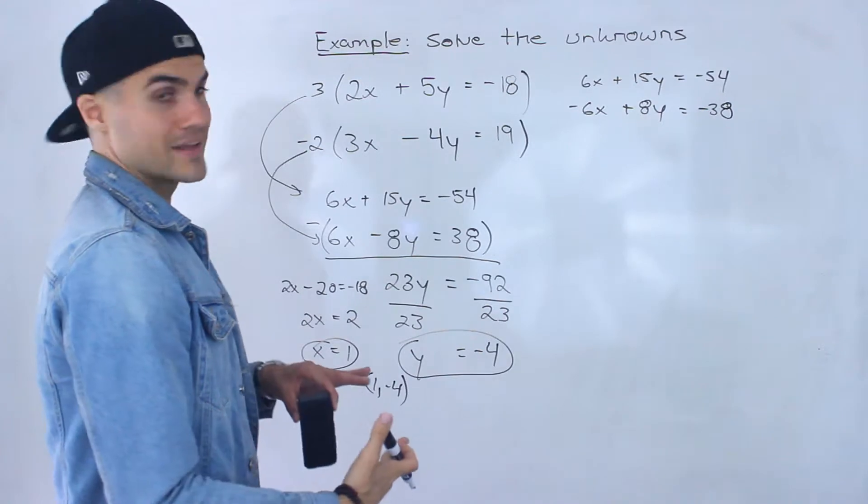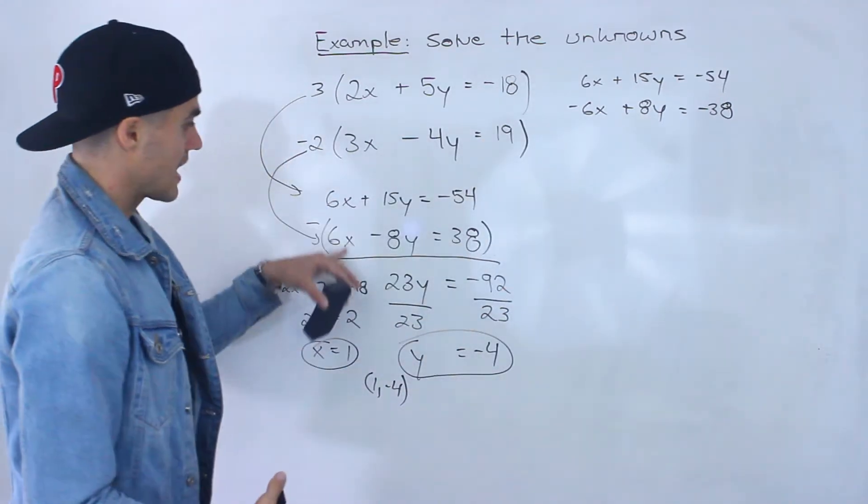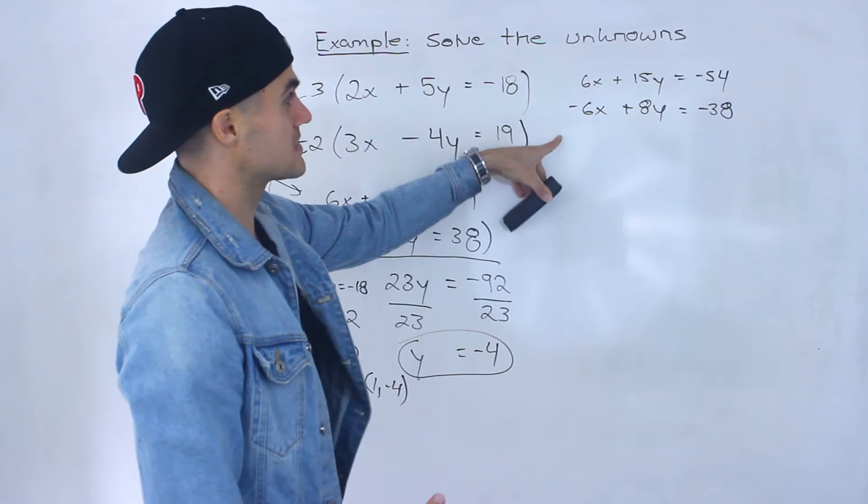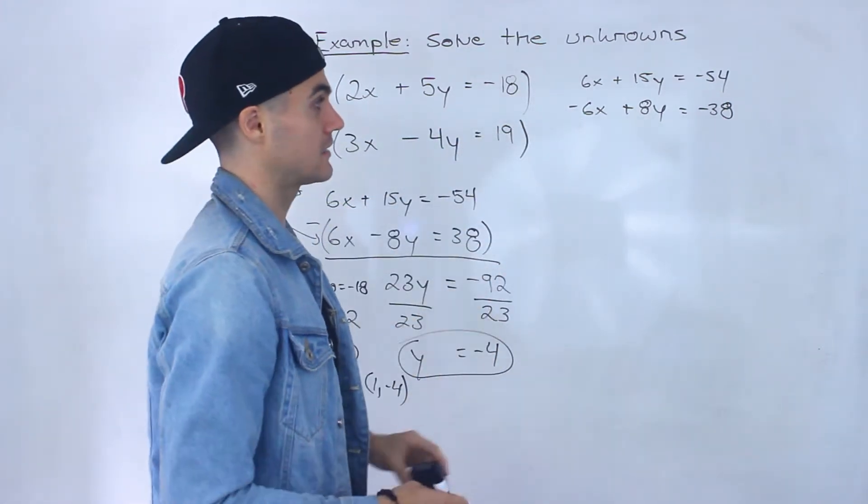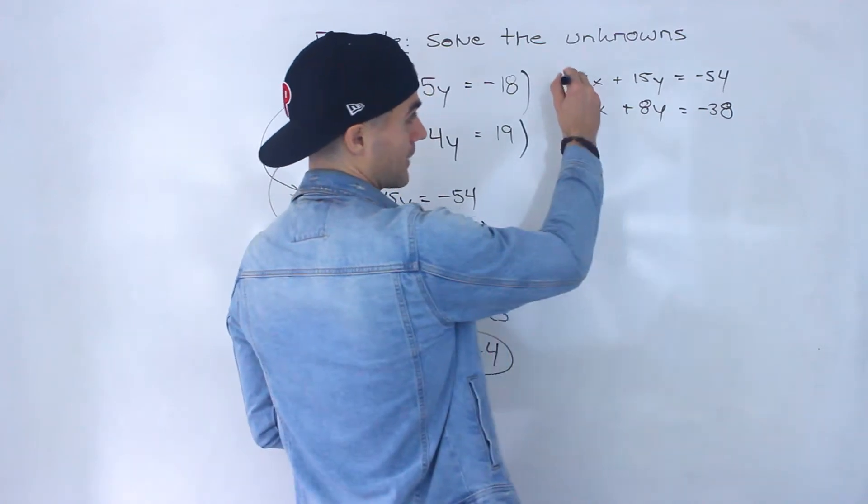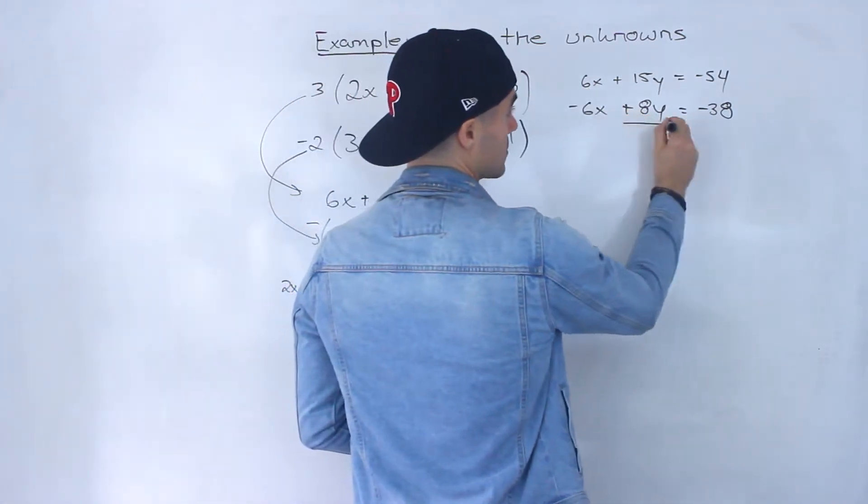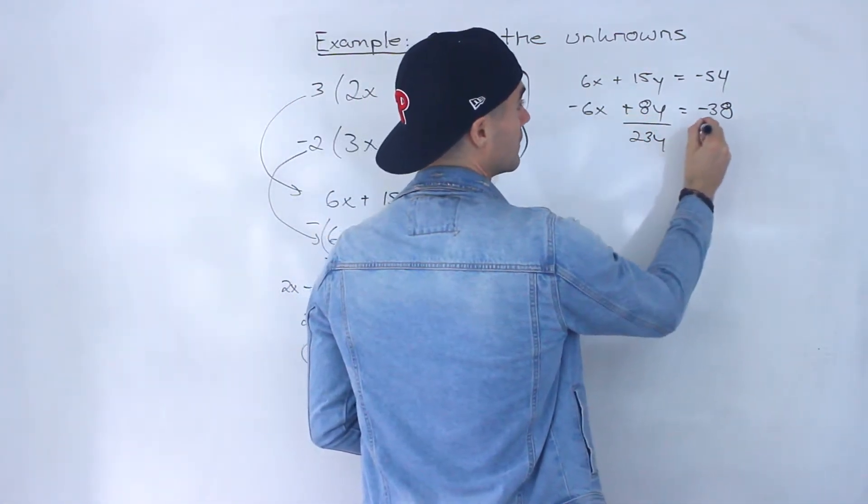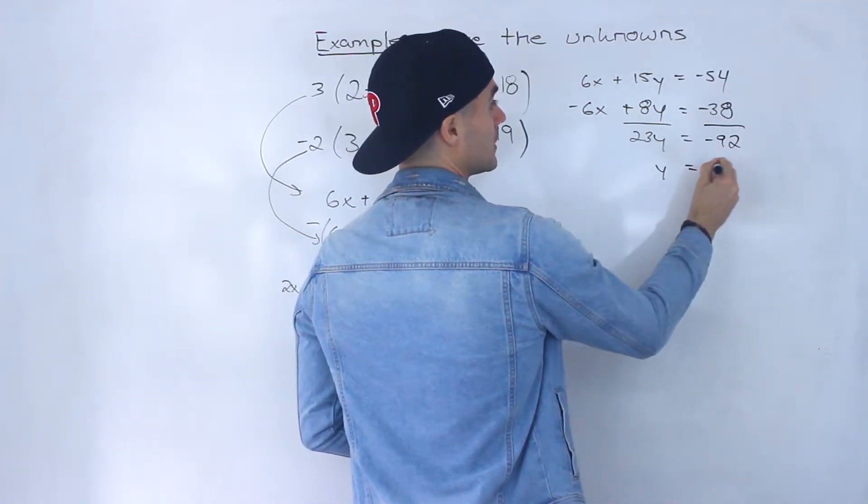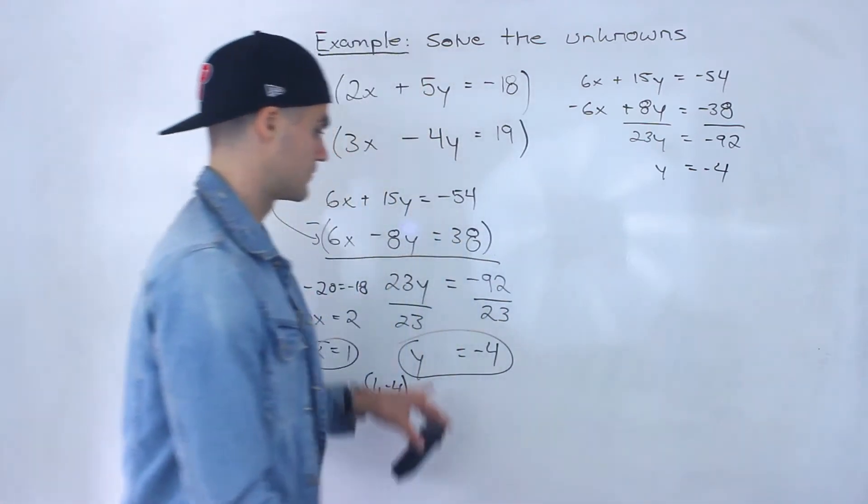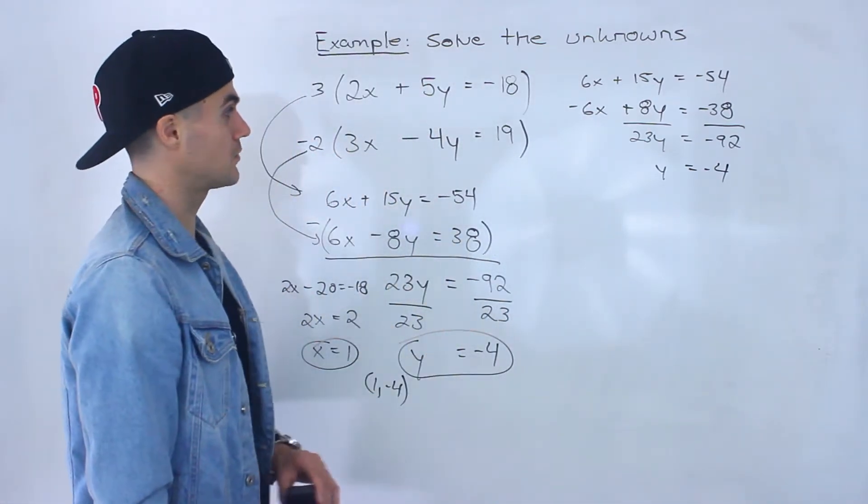And now instead of subtracting because the signs are the same I could add these because 6x plus negative 6x would cancel out to 0. Right so I would add these instead of subtracting and so I'd end up with 23y and then over here I'd end up with negative 92. Right so y would be negative 4. Same answer that we got before.